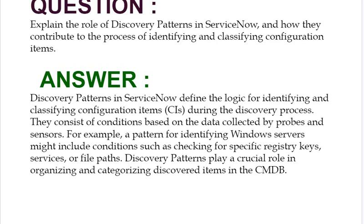They consist of conditions based on the data collected by probes and sensors. For example, a pattern for identifying Windows servers might include conditions such as checking for specific registry keys, services, or file paths. Discovery patterns play a crucial role in organizing and categorizing discovered items in the CMDB.